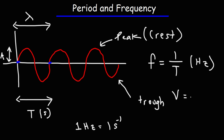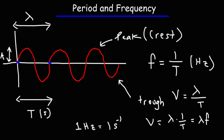The speed of the wave is the wavelength divided by the period. You can see this as wavelength times one over the period, and one over the period is the frequency. So the velocity of the wave is the wavelength times the frequency. Remember: frequency is one over the period, and wavelength times frequency equals velocity.